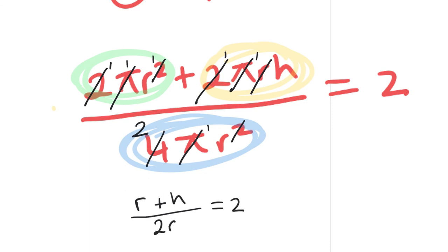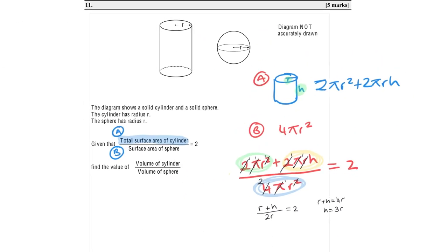Multiplying both sides by 2r: r + h = 4r, so h = 3r. We now know the height of the cylinder equals 3 times the radius. With h found, we can move to the second part of the question.